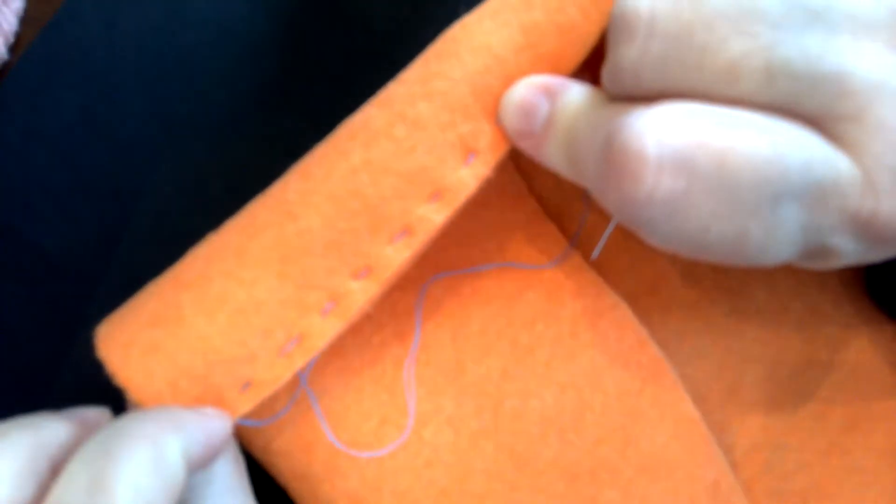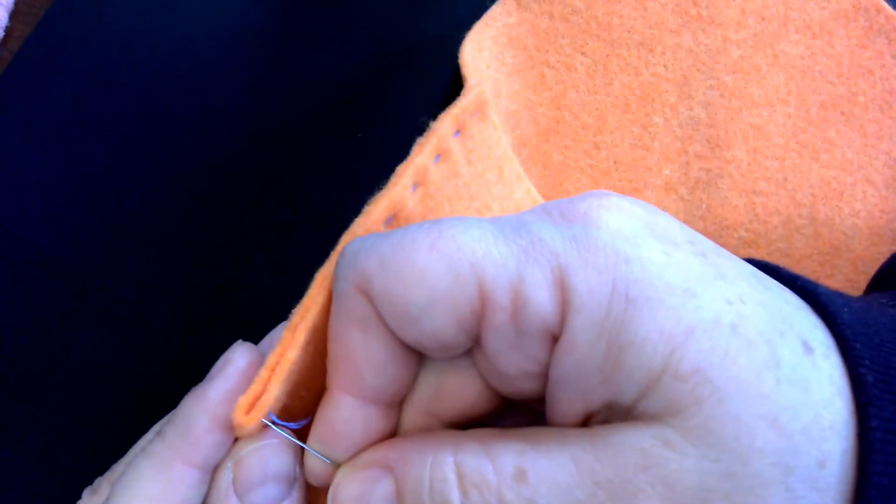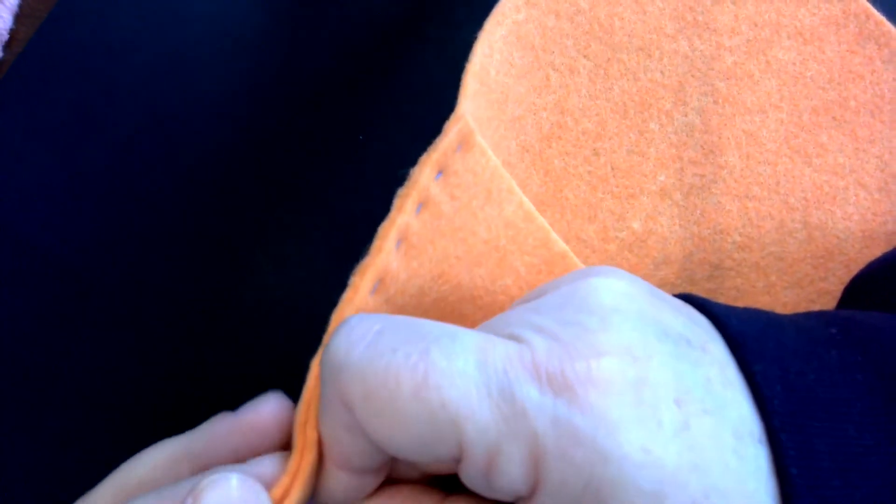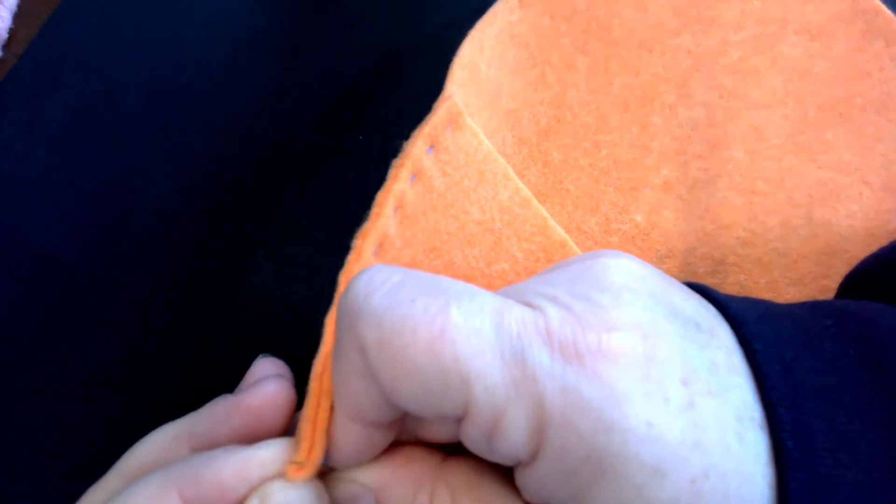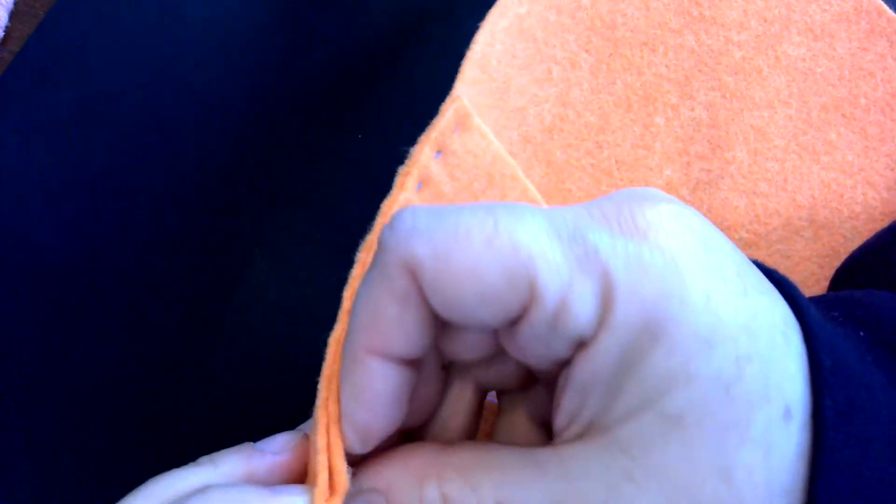Now I am going to put this back through, and I am going to try to only go through one layer so that my needle comes out in the middle. I almost got it. Let's see. Let's try that again. There we go. All right. I want to make sure this is nice and smooth. It doesn't have a lot of bumps. And I am going to go ahead and make another knot.